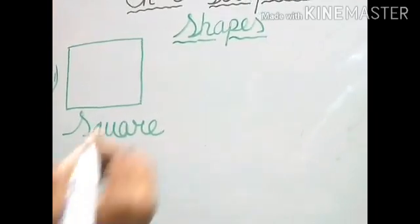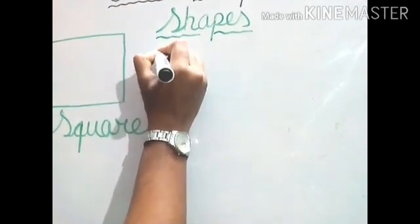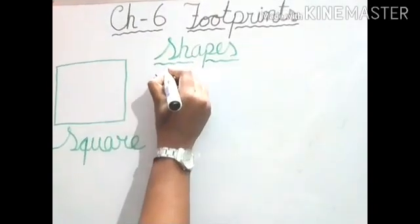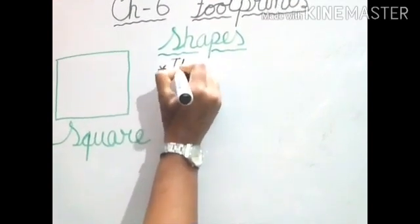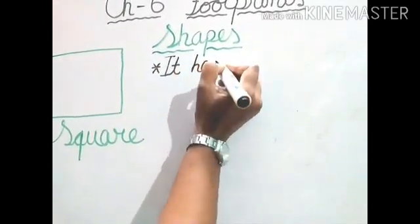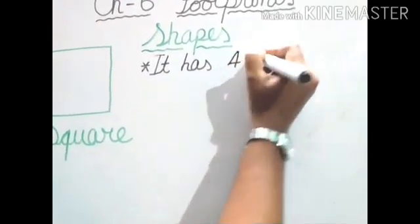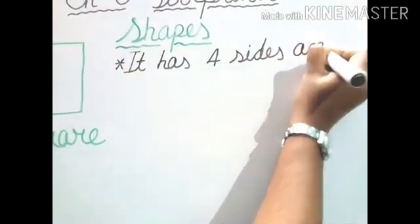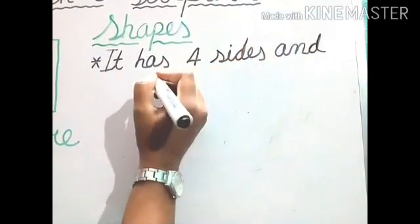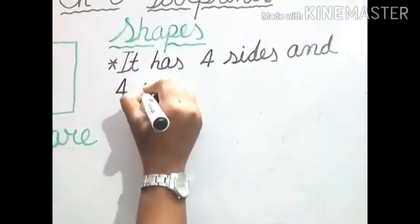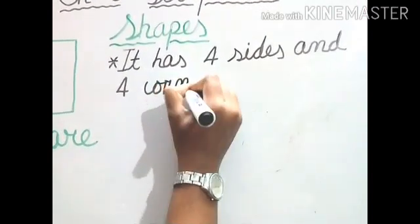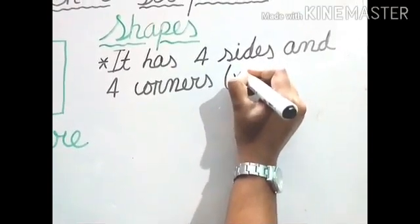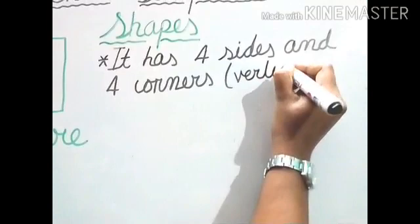Can you tell me the properties? Square properties. First property: it has four sides and four corners. And another name is vertices.